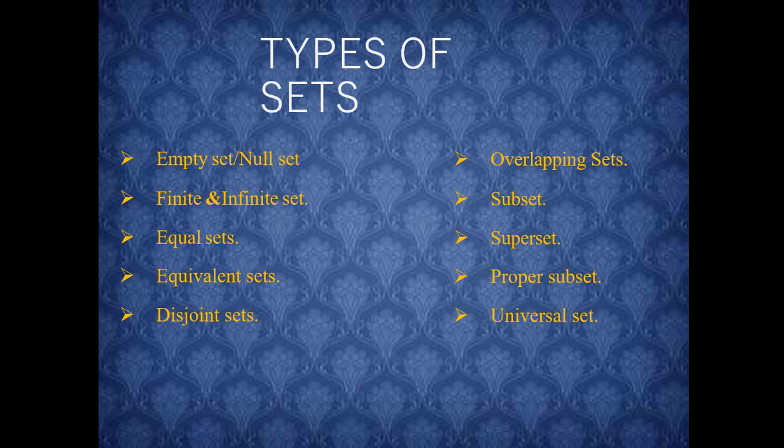The 10 types of sets are: Empty set (also called null set), Finite and Infinite set, Equal sets, Equivalent sets, Disjoint sets, Overlapping sets, Subset, Superset, Proper subset, and Universal set. Now one by one we will go through the explanation for each of these sets.